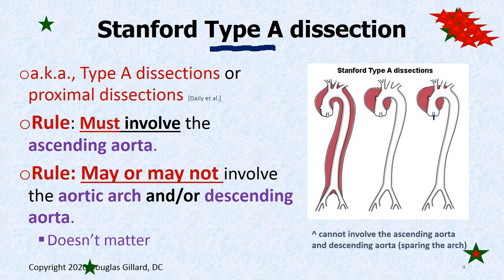The ascending aorta is where the heart attaches. Once it hits the brachiocephalic, that first takeoff, that's the aortic arch from here to here. The descending aorta is anything down from there. So if you have a Stanford A, that means it's isolated in the ascending aorta — A for ascending aorta.